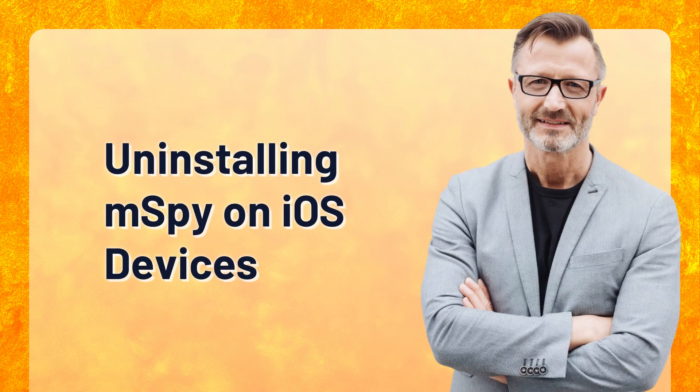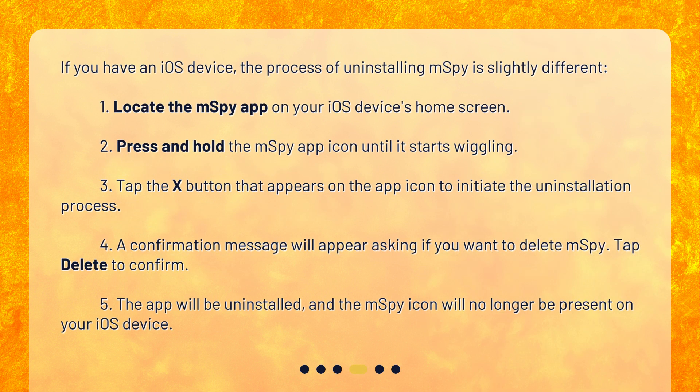Uninstalling MSPY on iOS Devices. If you have an iOS device, the process of uninstalling MSPY is slightly different. Step 1: Locate the MSPY app on your iOS device's home screen. Step 2: Press and hold the MSPY app icon until it starts wiggling. Step 3: Tap the X button that appears on the app icon to initiate the uninstallation process. Step 4: A confirmation message will appear asking if you want to delete MSPY.